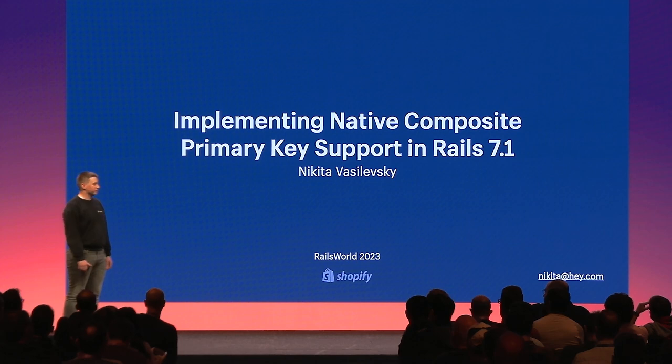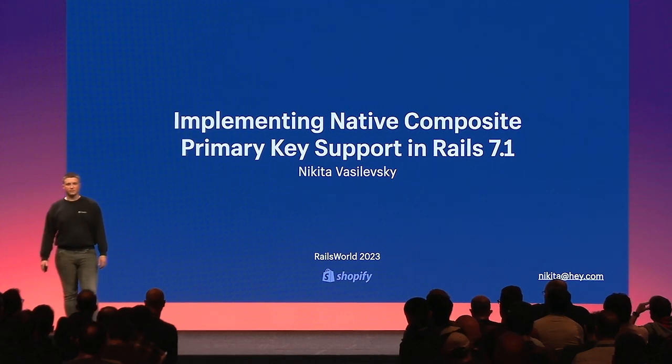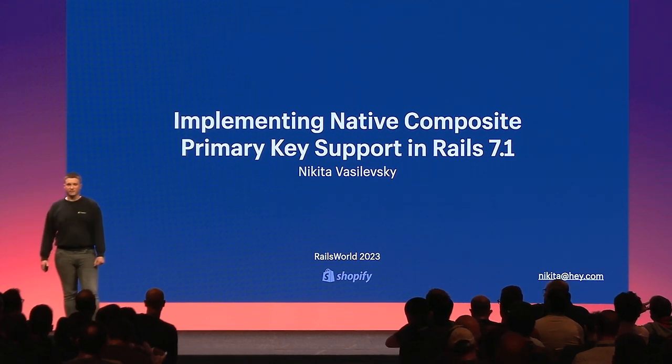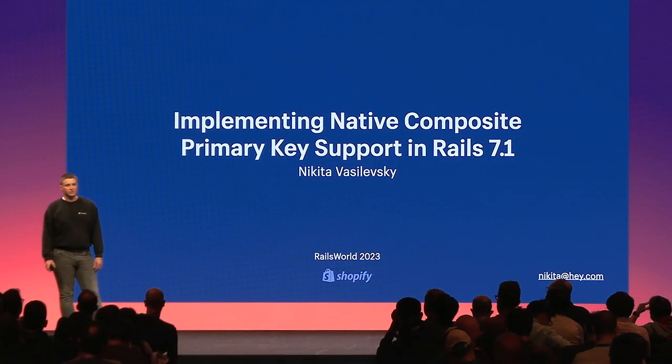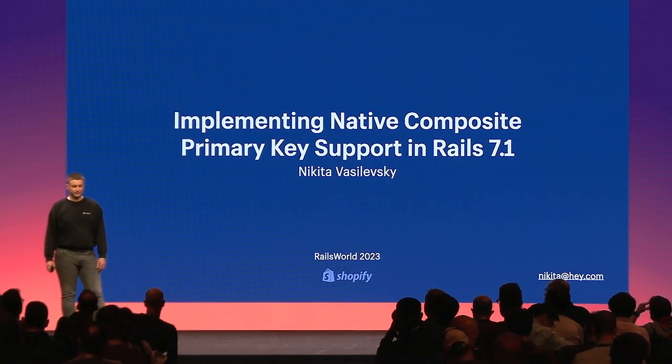This is where Rails 7.1 steps in with its native support for composite primary keys — much like having an SUV in your garage. It's not a tool for your day-to-day use, but irreplaceable when it comes to representing complex relational data.